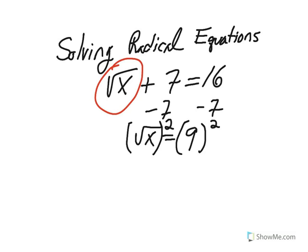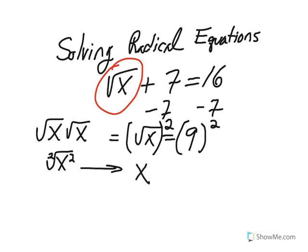The square root of x squared is equal to x because the square root of x times the square root of x is equal to the square root of x squared. Using our rule with our index, 2 goes into 2 one time, and we're left with x. 9 squared is 81. The solution is x equals 81.